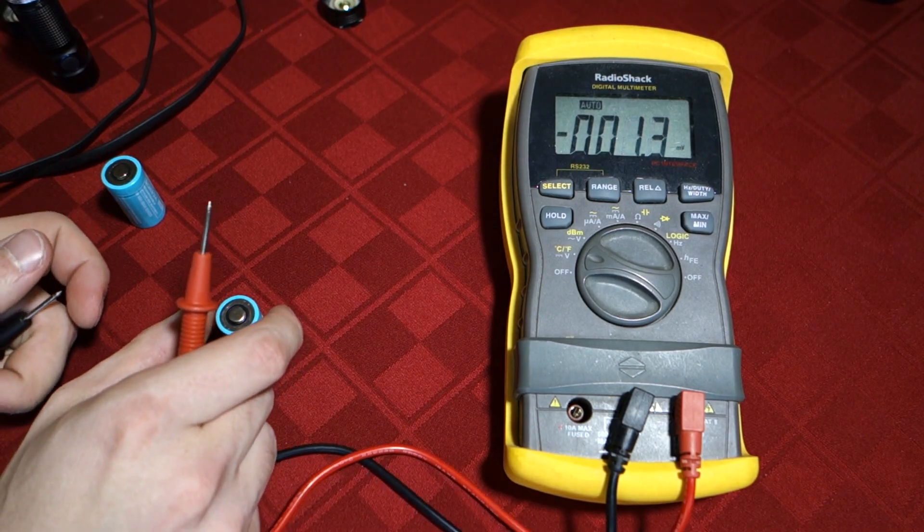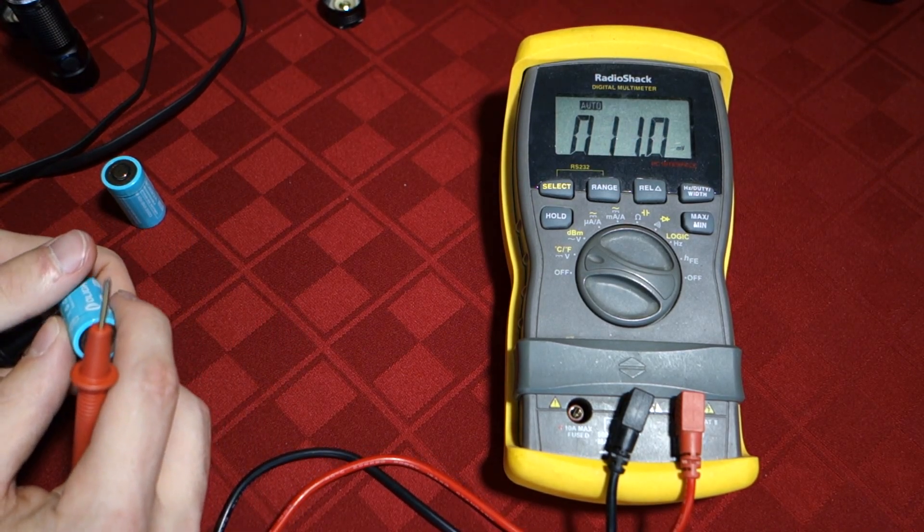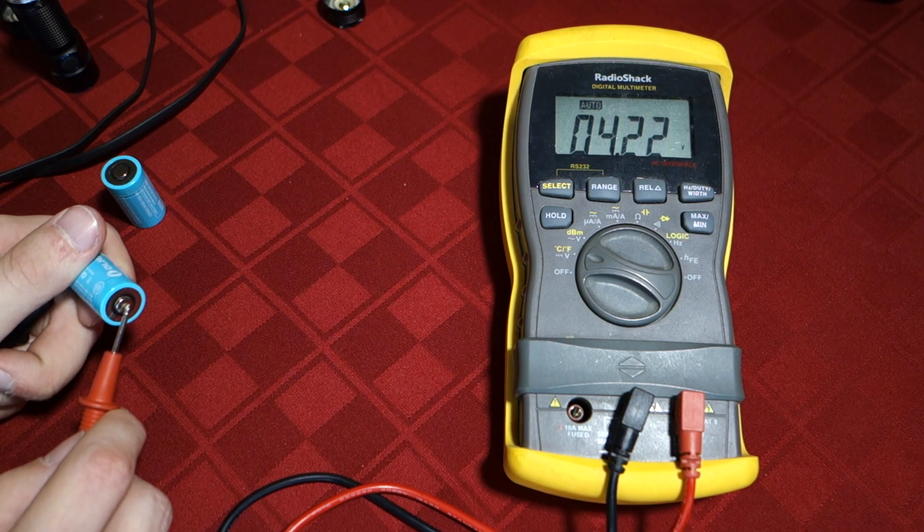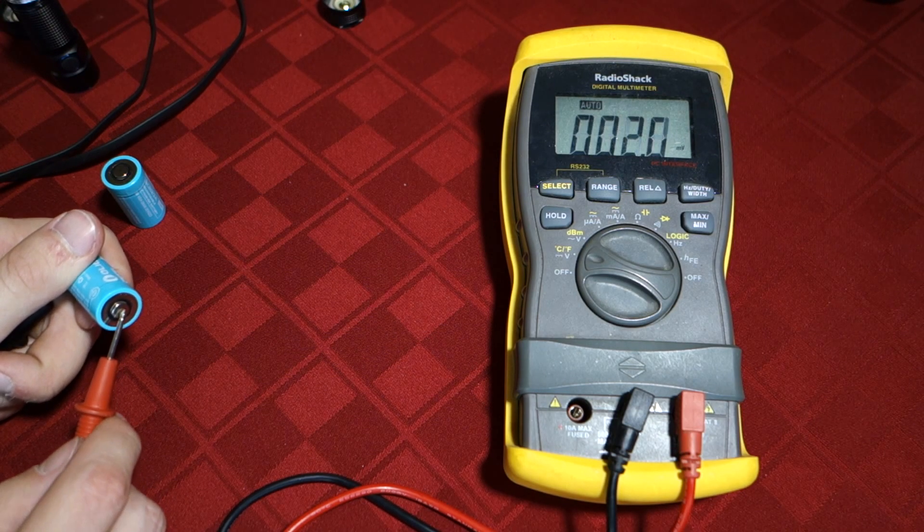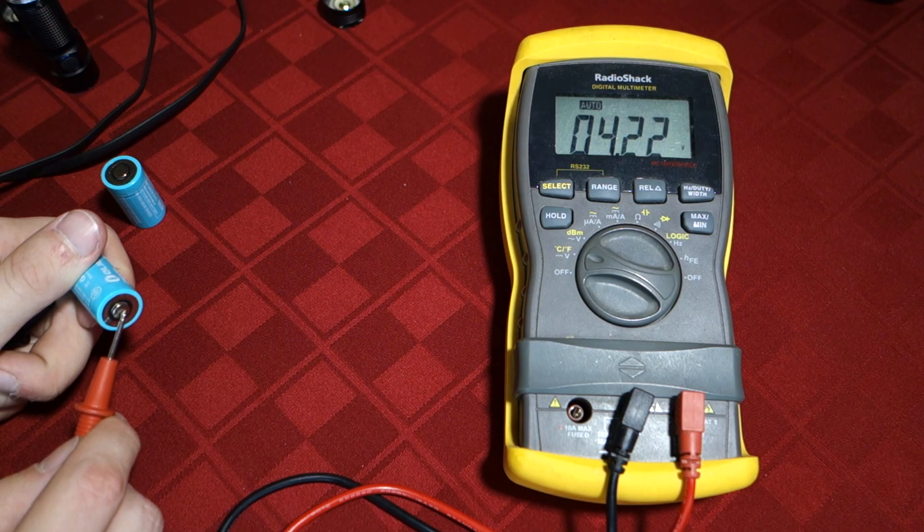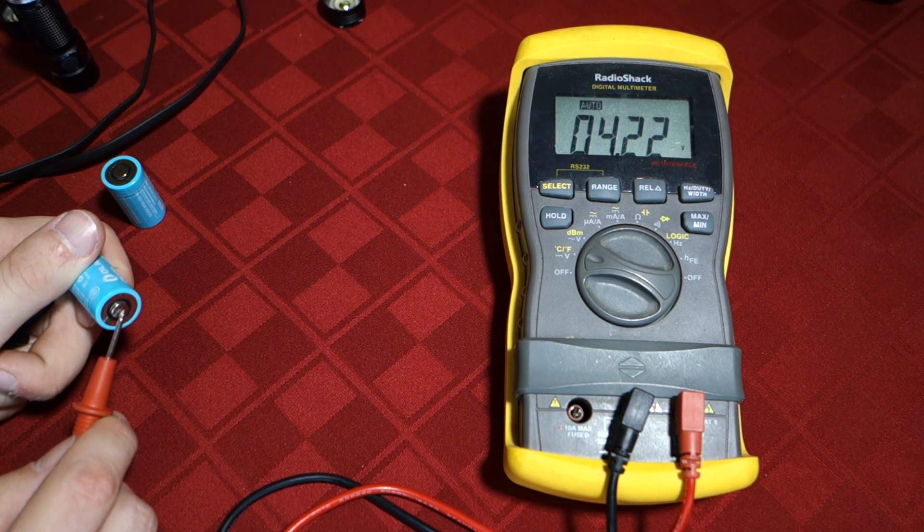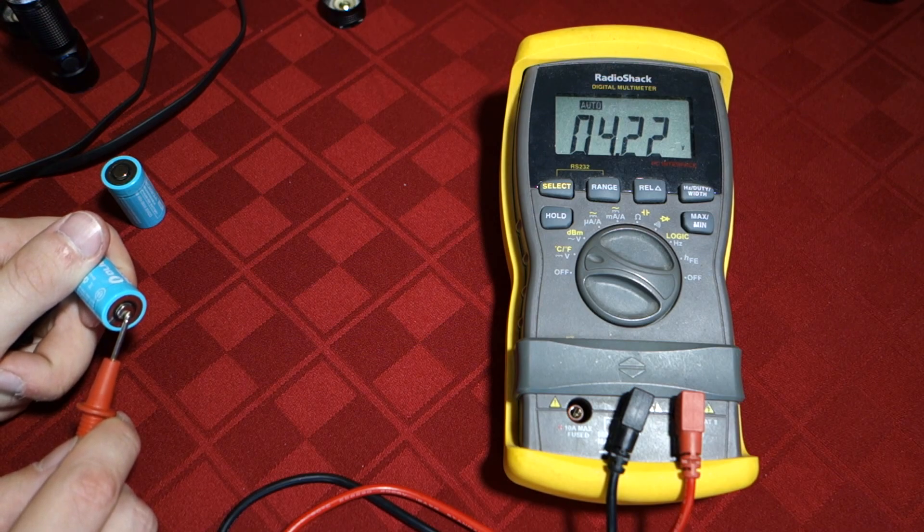And again, there's probably some natural variation to the chargers. And then let's see what this one's at. And this one's at 4.22. I'm taking our reading, 4.23, 4.22. It's probably 4.225 or something like that. So it's bouncing a little between that.